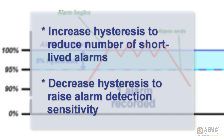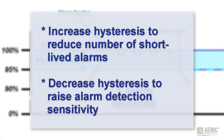By adjusting hysteresis, we can control the sensitivity of the alarm trigger. If your recording session results in a high number of alarms, you can set hysteresis higher. If the recording captures few alarms, you can lower the setting to ensure actual fast, short-lived events are not being missed.